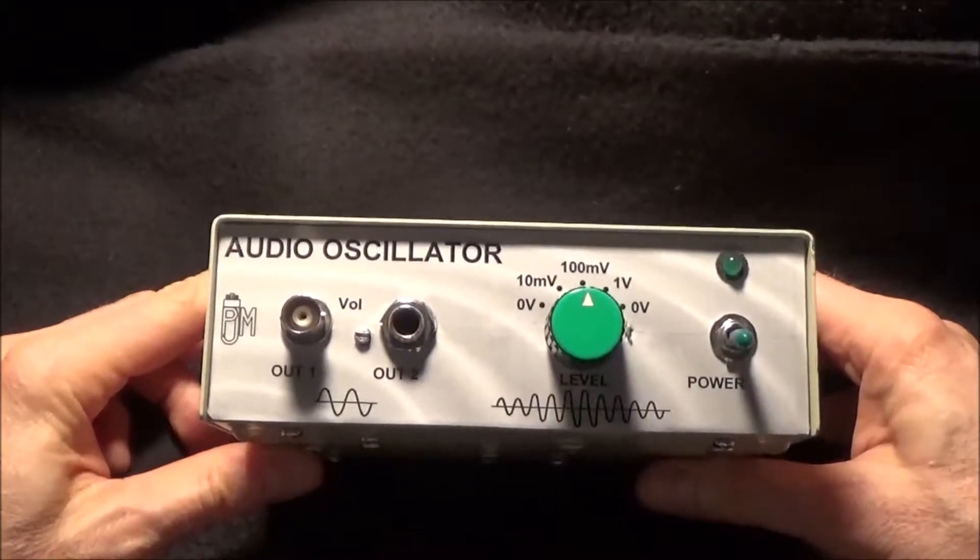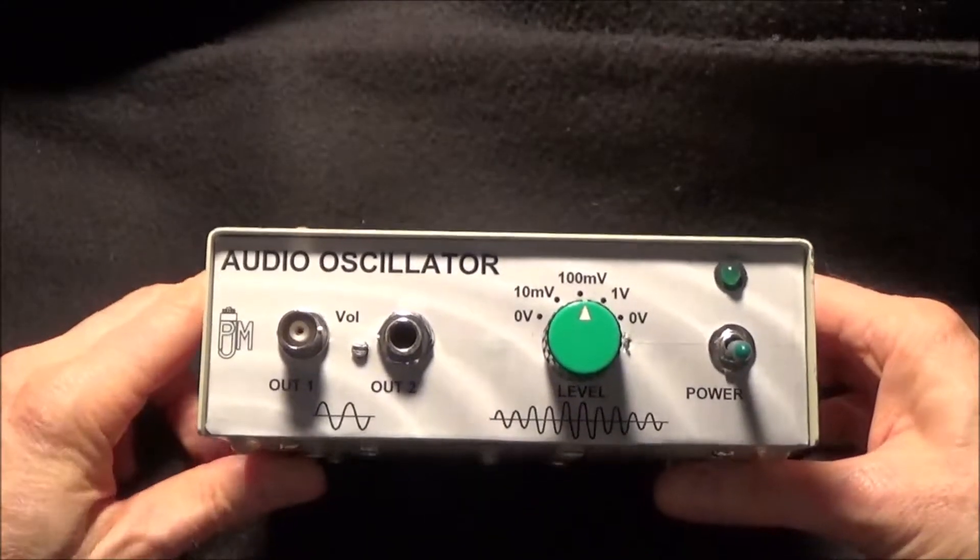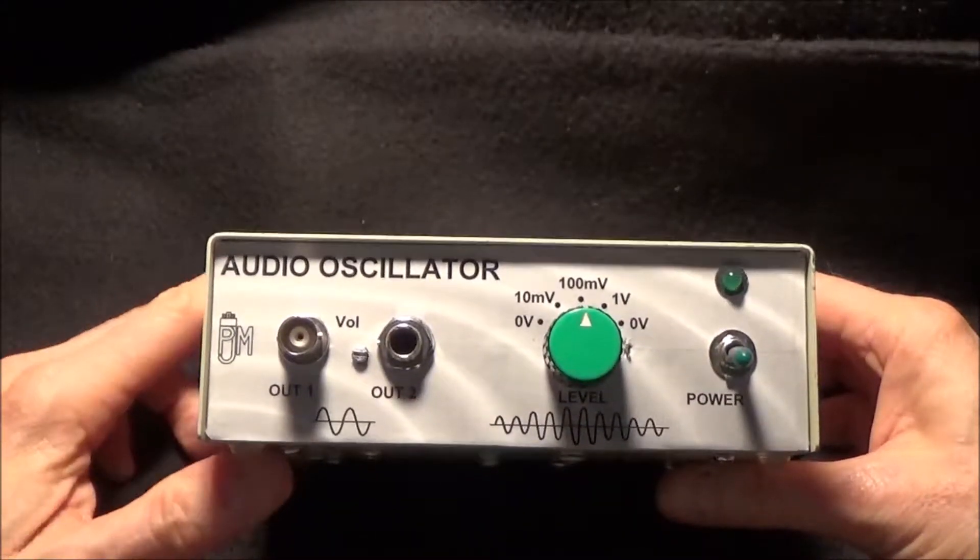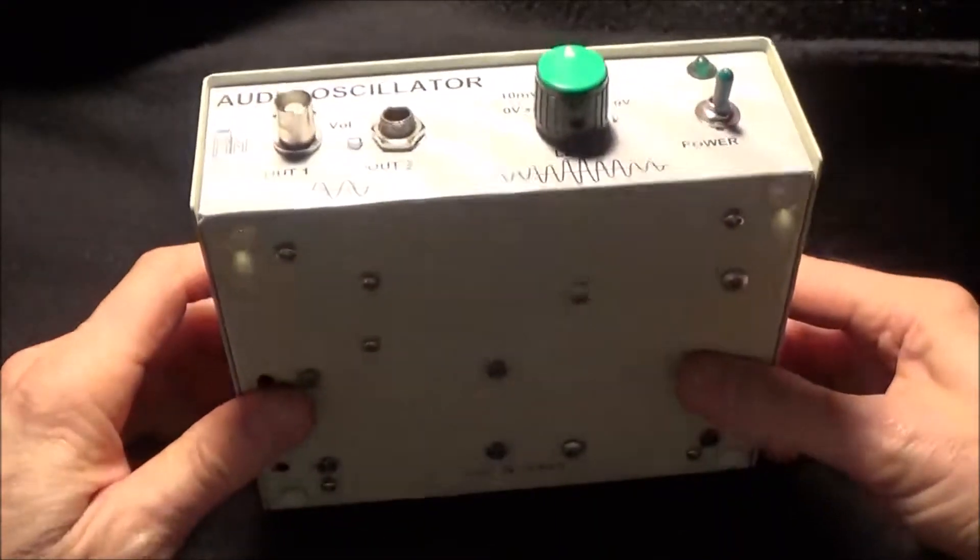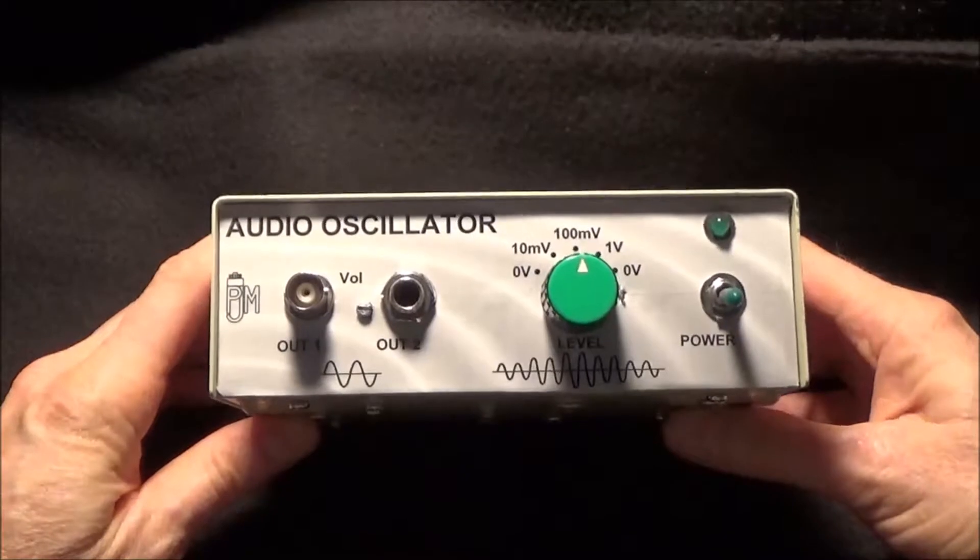For general testing or when you don't care about sweeping frequency ranges, this works great. Nowadays, you go on Amazon, buy a kit for like five dollars, and just have this little board.